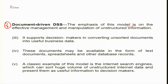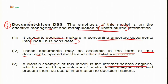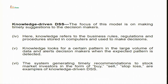The third is the document driven decision support system. The emphasis of this model is on effective management and manipulation of unstructured information. It supports decision makers in converting unsorted documents into useful business data. These documents may be available as text documents, spreadsheets and other database records. A classic example is internet search engines, which sort huge volumes of unstructured internet data and present them as useful information to decision makers.